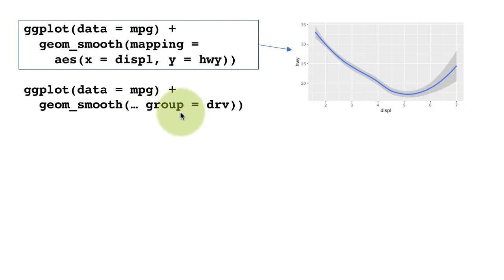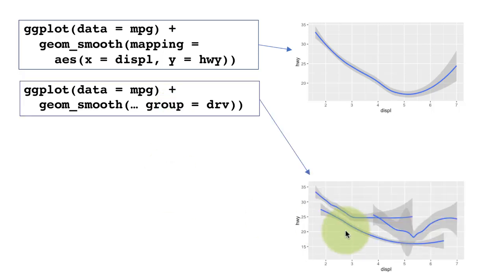So the group aesthetic is going to tell the system to divide the data into multiple sets and plot a separate line for each set. But the group aesthetic doesn't tell it how to display it differently. So all the lines are going to be the same. So all these lines look identical. But because of the fact that we have said group by drive, we've got one line for each type of drive.